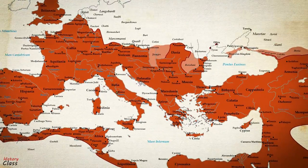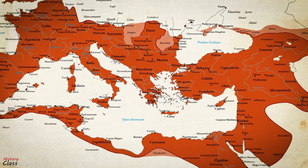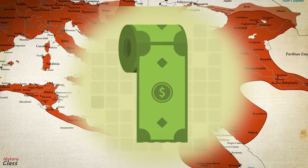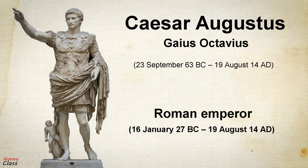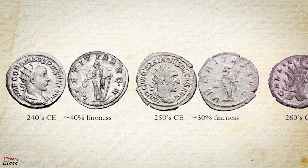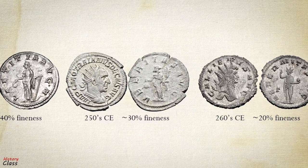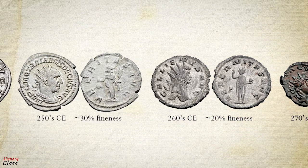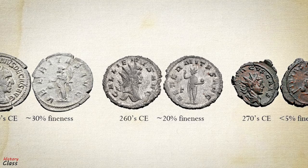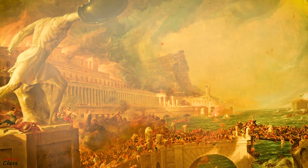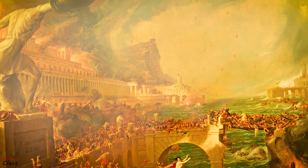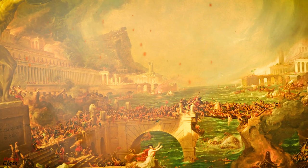The Roman Empire was the first state to have its economy hit by hyperinflation. During the reign of Augustus, the silver content of the currency was more than 95%, but over time it began to decline, especially during the 3rd century AD, reaching only 2% at the beginning of the reign of Emperor Diocletian. Diocletian's successors were unable to stop the economic crisis, which contributed to the collapse of the empire.